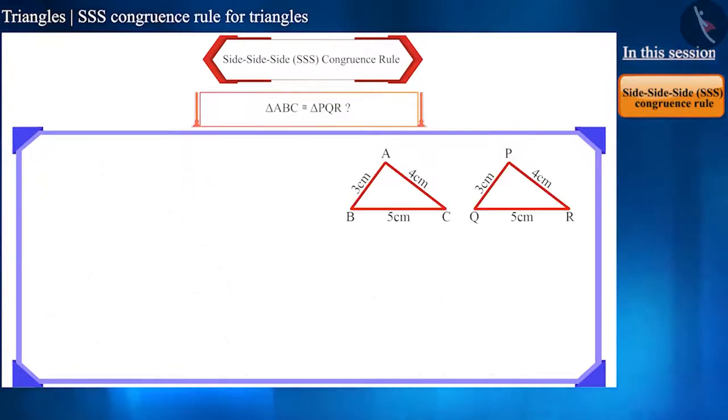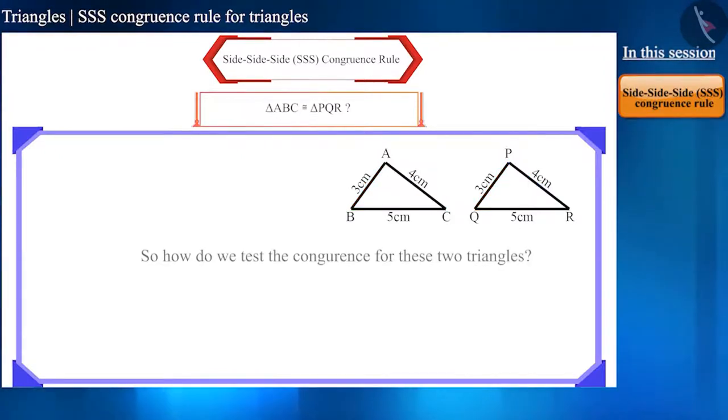But, in these triangles, no information is given about the angles. Only the length of the sides are given. So, how can we check the congruence of these triangles?